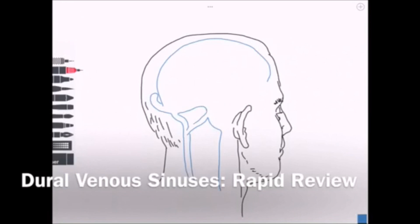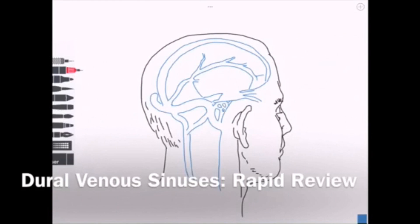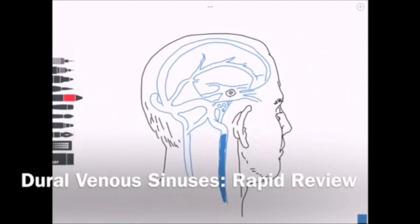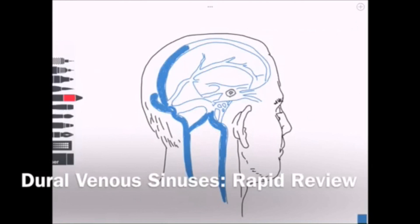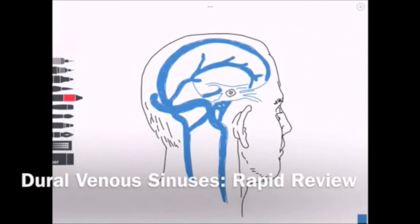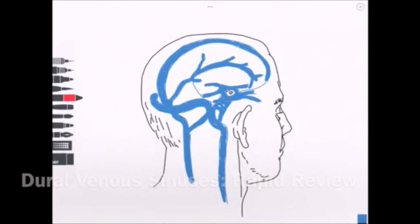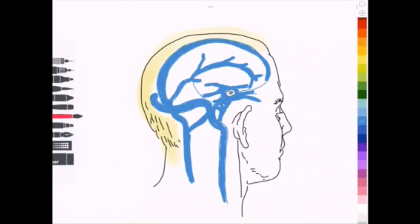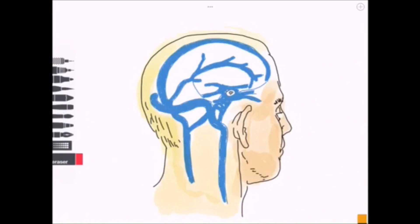Venous drainage in the brain begins with the cerebral veins, which are identical to any other kind of vein in the body. In the brain though, things get a little bit different and these veins drain into channels known as dural venous sinuses. These are endothelial-lined spaces between two layers of the duramater, and venous blood travels in these specialized compartments until eventually emptying into the internal jugular vein.